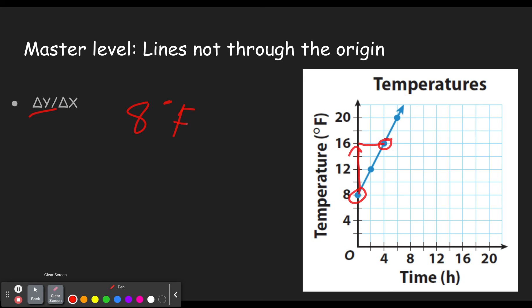And then we want to see how much the x changes. That's our next thing. How much does the x change? That's going to go in the denominator. So the x goes from 0 to 4. So from 0 to 4, that's a change of 4 hours. And so we get a slope of 2 degrees Fahrenheit per hour.